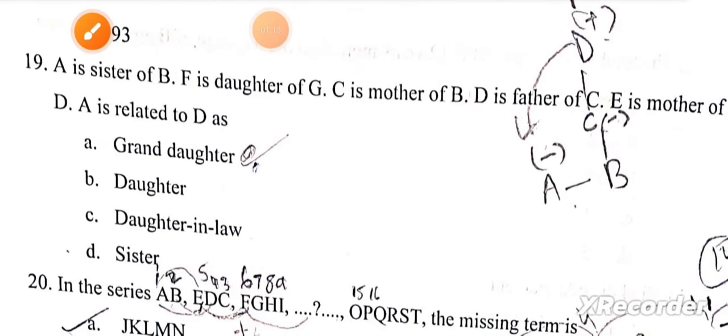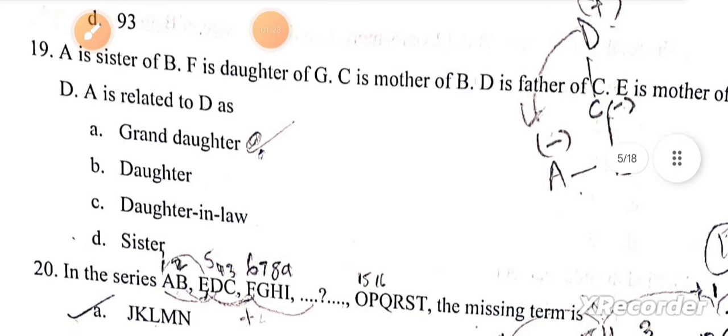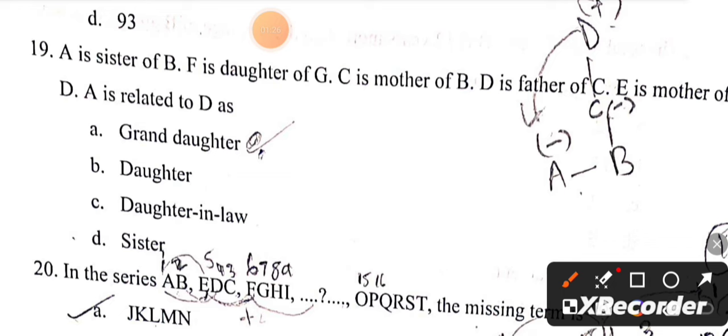If A is the sister of B, F is the daughter of G, C is the mother of B, D is the father of C, E is the mother of D, then A is related to D as granddaughter.